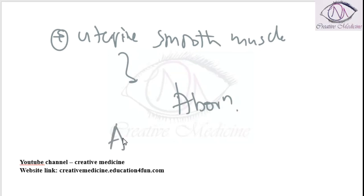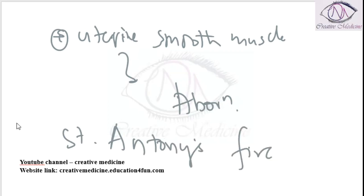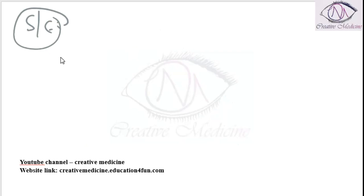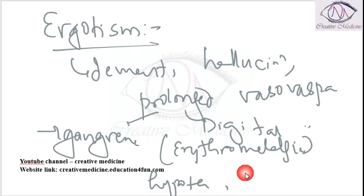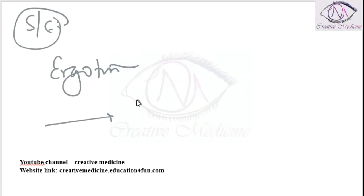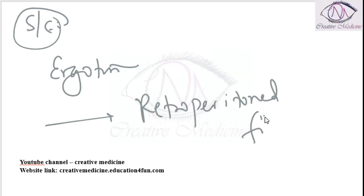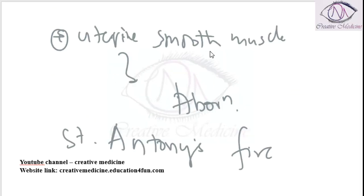In medieval times, ergot poisoning was called Saint Anthony's fire. Side effects of ergot alkaloids include ergotism, which presents with hallucinations, burning of extremities, and digital vasospasm which can result in gangrene. The patient can also have hypotension and nausea. Another important side effect is retroperitoneal fibrosis. Ergot alkaloids also activate smooth muscles, particularly uterine smooth muscles.